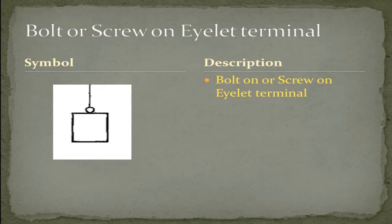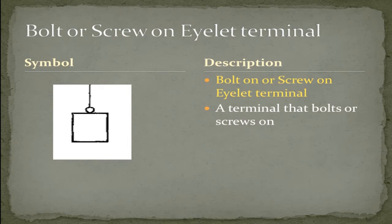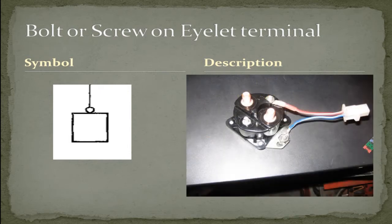A bolt-on or screw-on eyelet terminal. A terminal that bolts on or screws on. Example: most chassis grounds. Here's another example of a starter solenoid that uses eyelet connections.